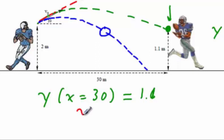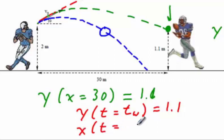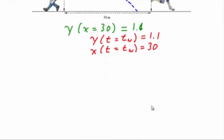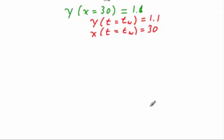So in order to satisfy the condition that we have defined for ourselves, we actually need to do so by requiring two things. Number one, we need to require that y at a particular time—we'll call it time of the win—is equal to 1.1. And then, since this is incomplete, we need to furthermore require that x at exactly the same time, time of the win, is equal to 30. By requiring both of these conditions, we guarantee that the trajectory the ball undergoes will land exactly in the receiver's arms and the touchdown will be made.